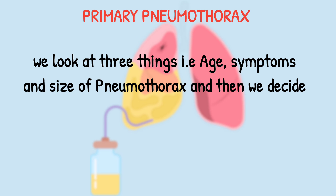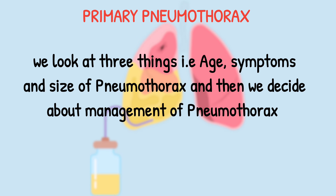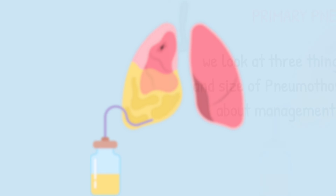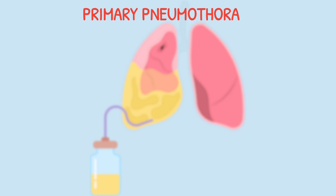When managing primary pneumothorax, we look at three key factors: the patient's age, symptoms such as shortness of breath, and the size of the pneumothorax. Once we have these three things, we decide on management.